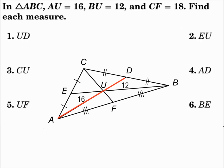Consider median AD. The longer part is 16; it's twice as big as the other part, which is 8. On segment EB, the vertex side is the longer part, which is 12, and it's twice as much as the other end, which is 6. In segment CF, which is 18, the shorter part is one-third of that. If the whole thing is 18, then one-third of that is 6. So the shorter end is 6, and the vertex side is twice as much, which is 12.